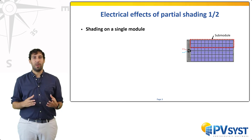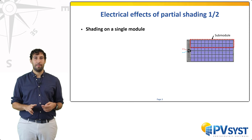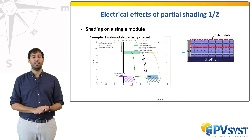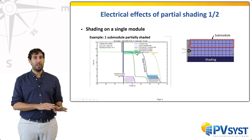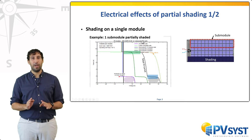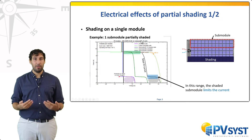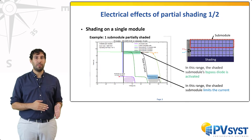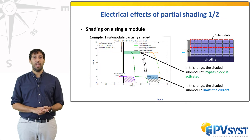When the sub-modules forming the module are put together, you obtain the total IV curve in black. Here we have shaded one sub-module among the three. There are two operating regimes, shown in blue and green: either in blue at a current limited by the shaded cells, or in green at a lower voltage because the bypass diode is activated. In the second regime, the power from the diffuse irradiance shining on the shaded sub-modules is lost. This roughly corresponds to the dashed area.